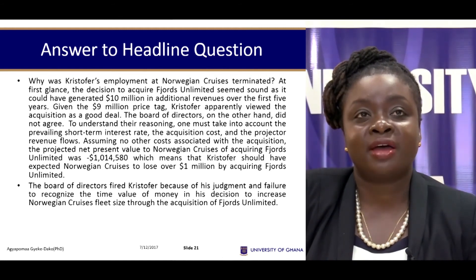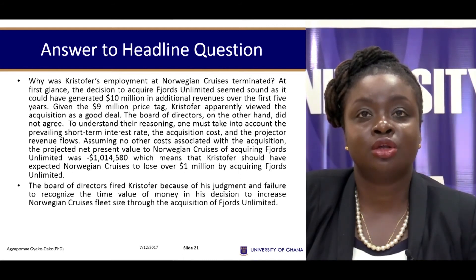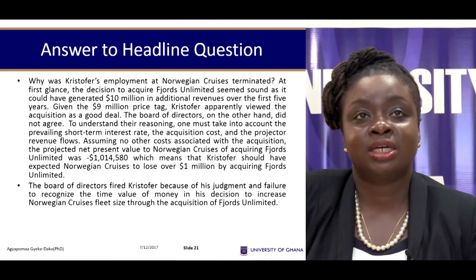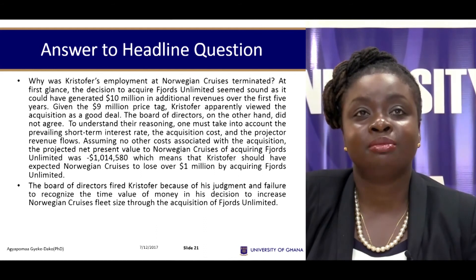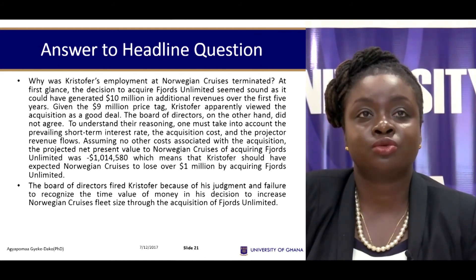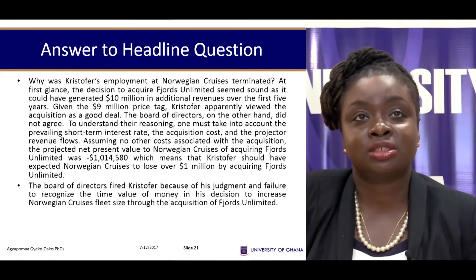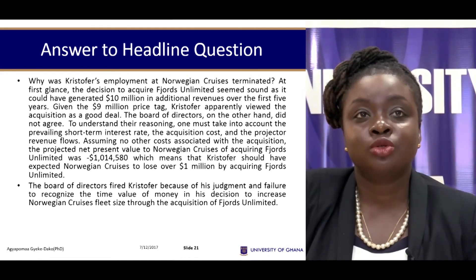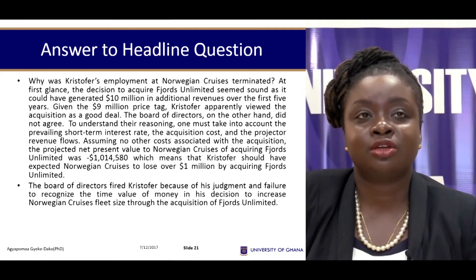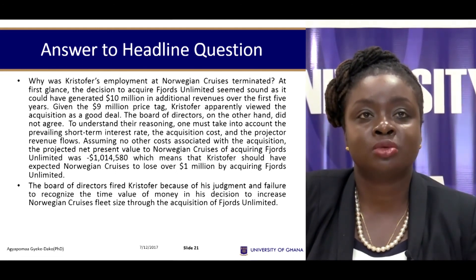Now, Christopher looked at the $2 million for five years and came up with the idea that for five years, $2 million inflows would give $10 million. And because that was going to be bigger than the cost of $9 million that was going to be charged, then it was a good deal for him. What he failed to do was to take the present value — that is, discount the cash flows that he was going to be getting.